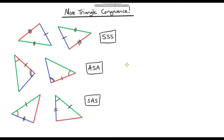Hello and welcome to another video on congruence. In the last video we looked at three different combinations of angles and sides. We looked at two triangles that had the same three side lengths — side, side, side. We looked at the angle, side, angle combination and also the side, angle, side combination. And we established that all three of these are congruency axioms.